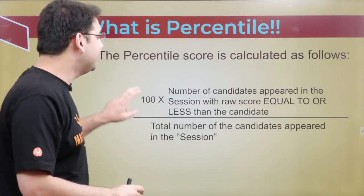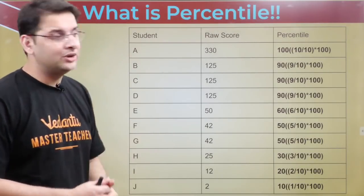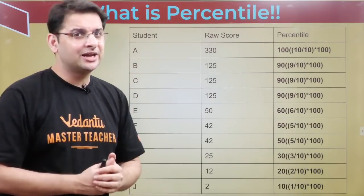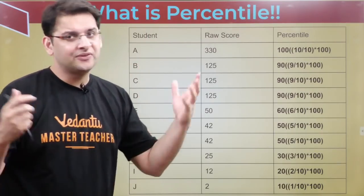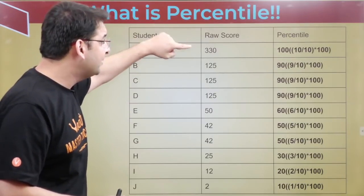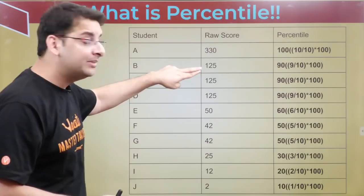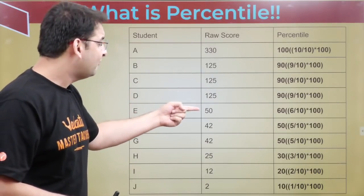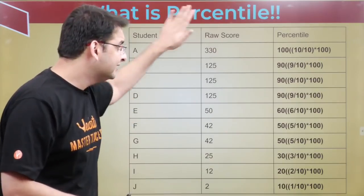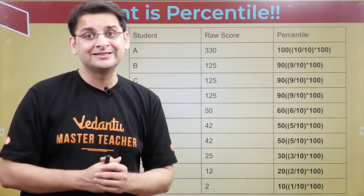Let me explain with a very simple example. Say in an exam, 10 children appeared — A to J. The maximum score is 350. Topper A has a raw score of 330. Then second, third, and fourth have a score of 125 each. Followed by 50, 42, 42, 25, 12, and 2. So these are the scores of the 10 people who appeared in the examination.